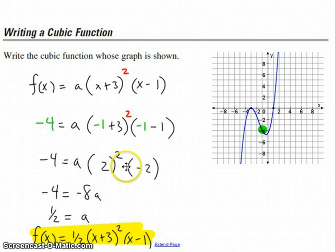And I run this through, trying to figure out what a is. So if negative 4 is equal to 2 squared times negative 2, then negative 4 is equal to negative 8a. So a is therefore a half. And I put 1 half in place of a in the equation that I had up here. And this now is the cubic function that describes that blue curve there.